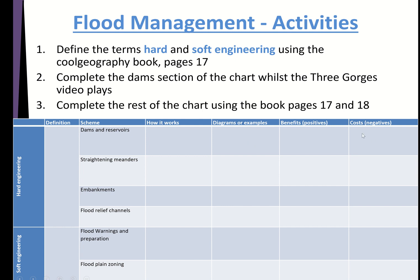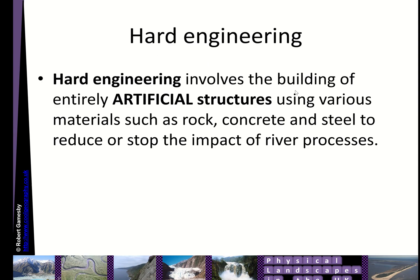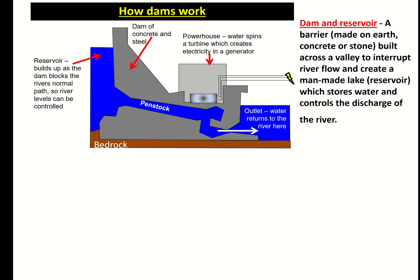Hard engineering is the building of entirely artificial structures using various materials like rock, concrete, and steel to reduce or stop the impact of river processes. These tough materials are used to try and manage the river and prevent it from flooding or eroding.